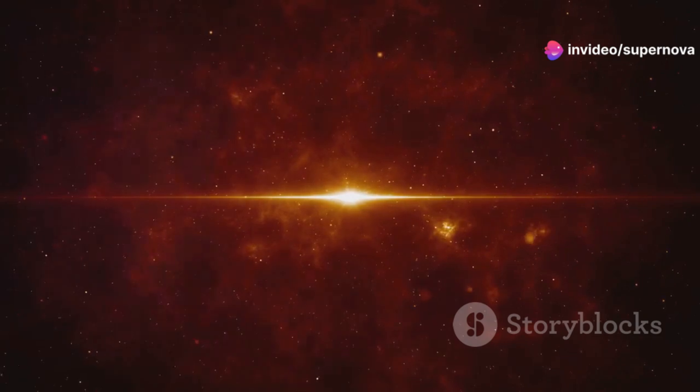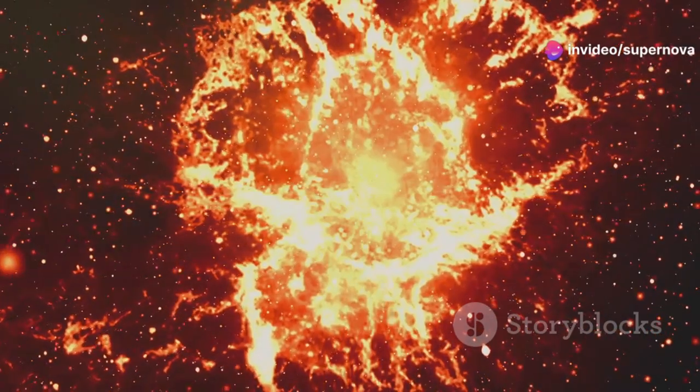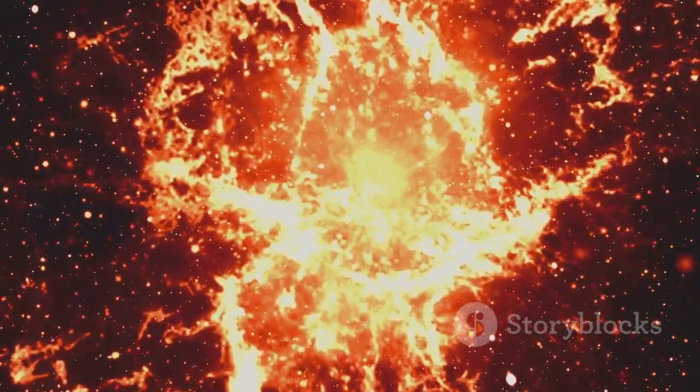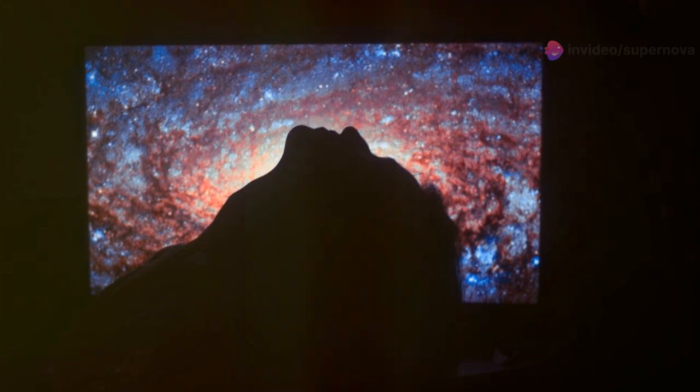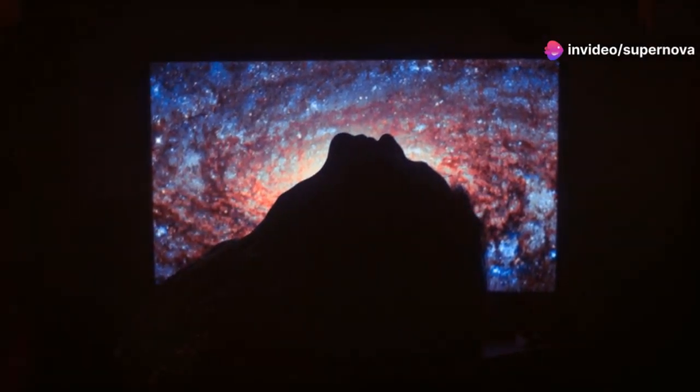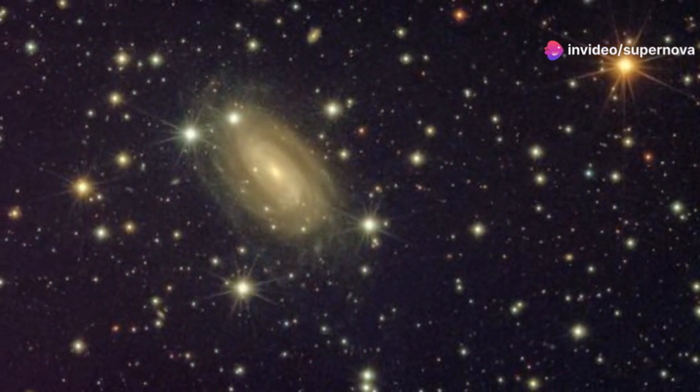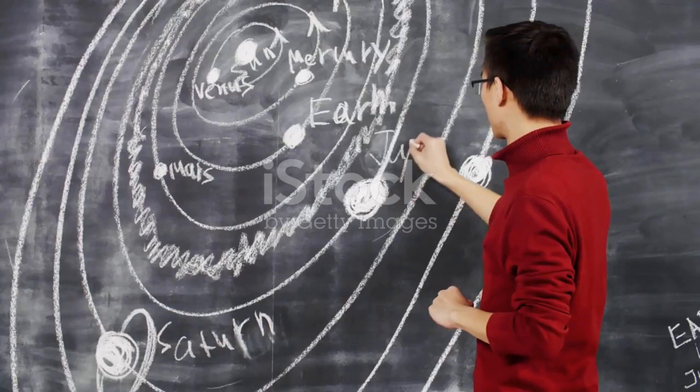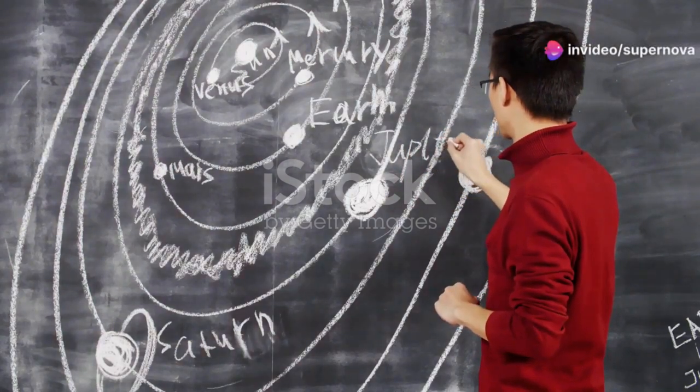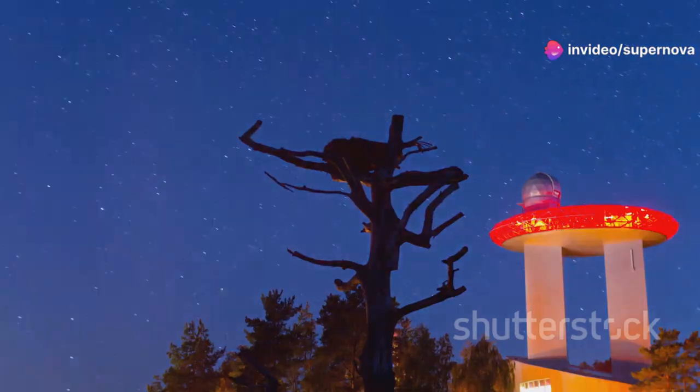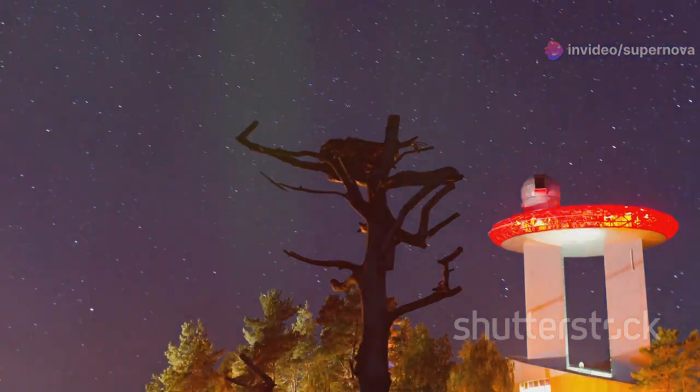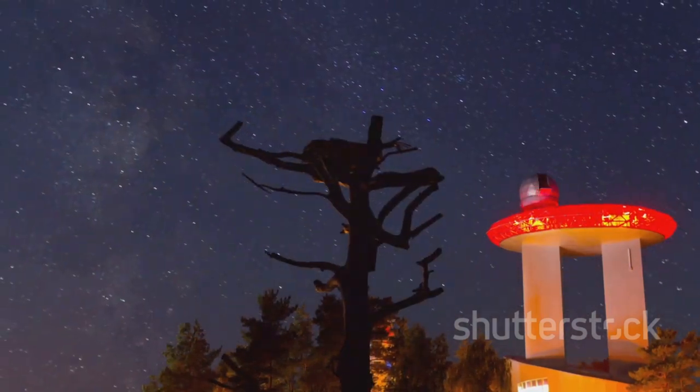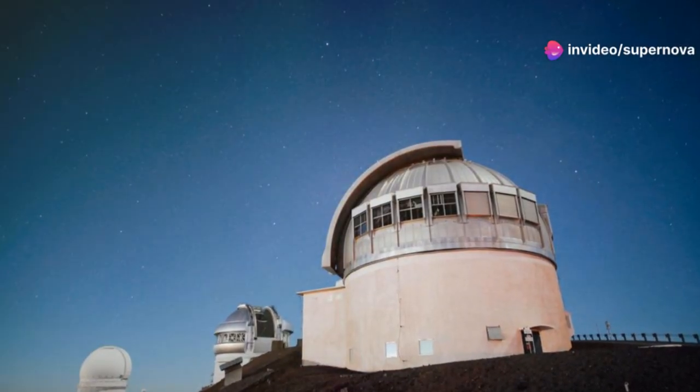The study of Betelgeuse's supernova will have implications far beyond our understanding of stars. Supernovae are crucial to our understanding of the universe's expansion rate, as they serve as standard candles for measuring cosmic distances. By observing the brightness of a supernova and comparing it to its known luminosity, astronomers can determine its distance and, by extension, the distance to its host galaxy. This technique has been instrumental in mapping the large-scale structure of the universe and measuring the Hubble constant, the rate at which the universe is expanding. Betelgeuse's proximity will allow astronomers to calibrate these measurements with unprecedented accuracy, potentially revealing new insights into the nature of dark energy, the mysterious force driving the universe's accelerated expansion.